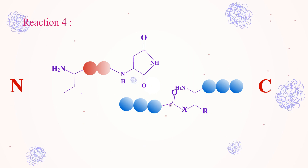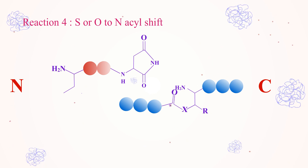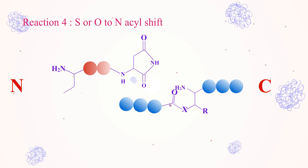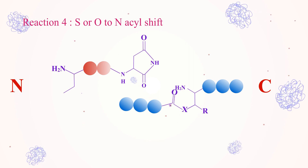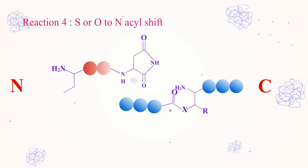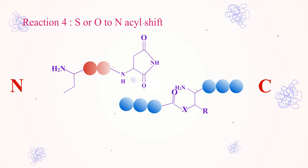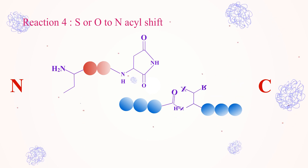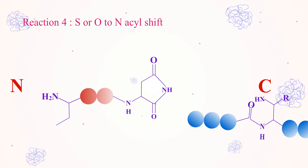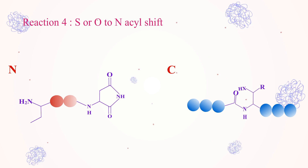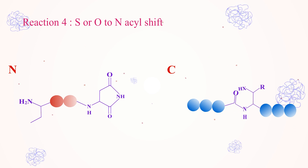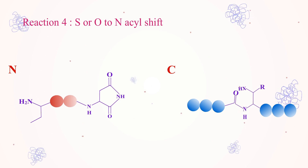Reaction 4: S-to-N acyl shift. In the final step of protein splicing, the ester moiety will spontaneously rearrange to form a protein with a more thermodynamically stable amide group. This final step is irreversible.